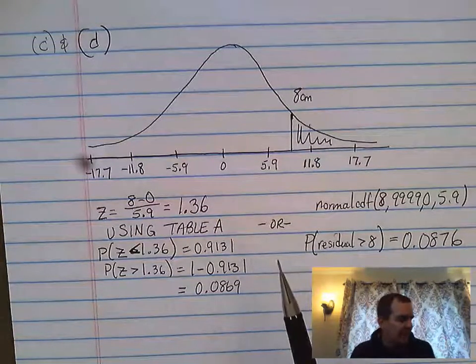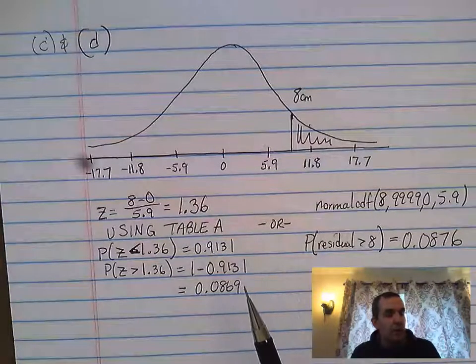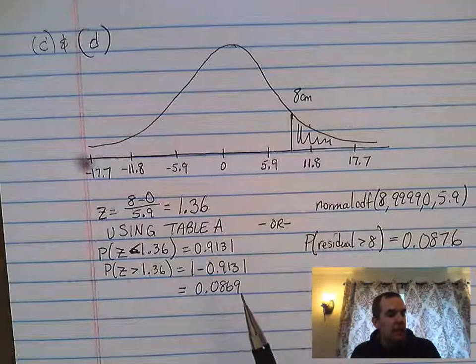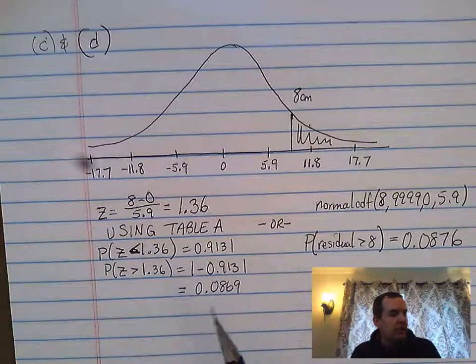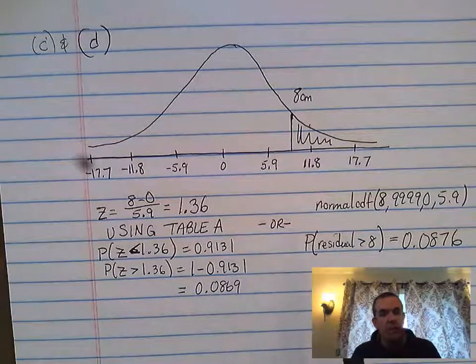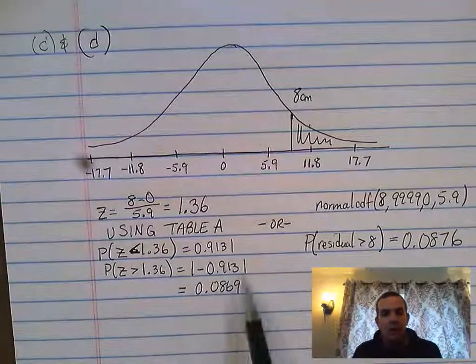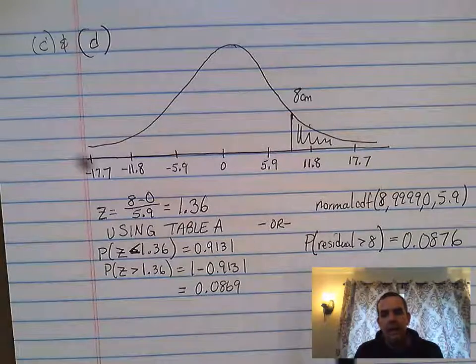Then part D actually asks you the question that says based on your answer to part C, would it be surprising to randomly select a high school senior from this school with a foot length of 20 centimeters and a height greater than 165 centimeters, which is basically saying are these numbers surprising?